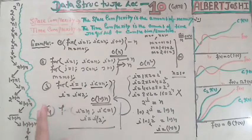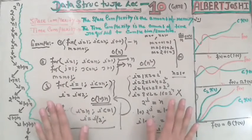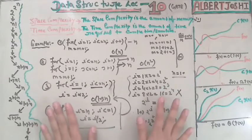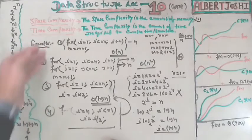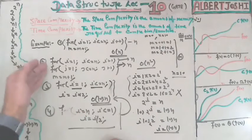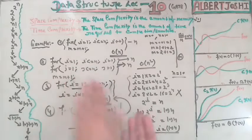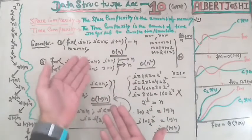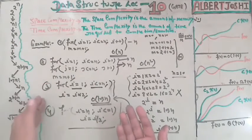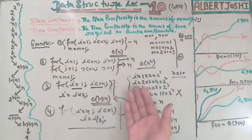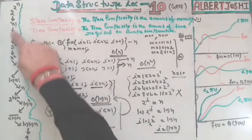Whenever you are writing code — suppose you are working at a company like Google and they have given you a task — the software tester will use mathematical modeling to check how much time your algorithm is taking. They will also check whether another algorithm exists that completes the same task in less time. We use mathematics in data structures to complete all these tasks.